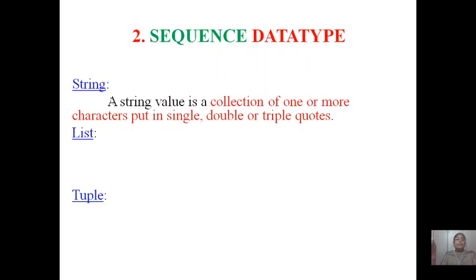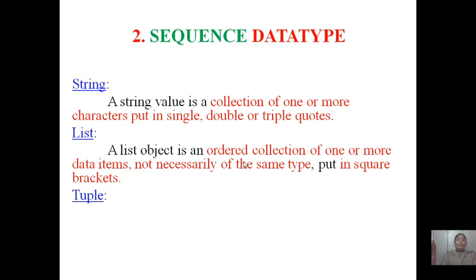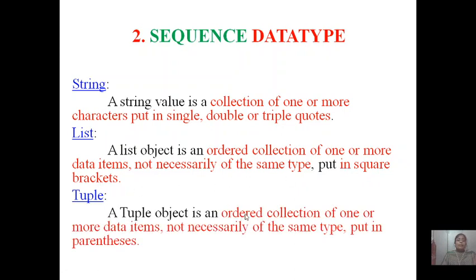String is nothing but a collection of one or more characters. They can be enclosed in single or double or triple quotations. List is an object and it is an ordered collection of one or more values. But these values need not be same type, they can be of different types, and they must be kept in square brackets. Tuple means it is an ordered collection of one or more data items, similar like list, but these data items are put in parenthesis. If you are using tuple you have to keep it in parenthesis. If you are using list you have to keep them in square brackets.